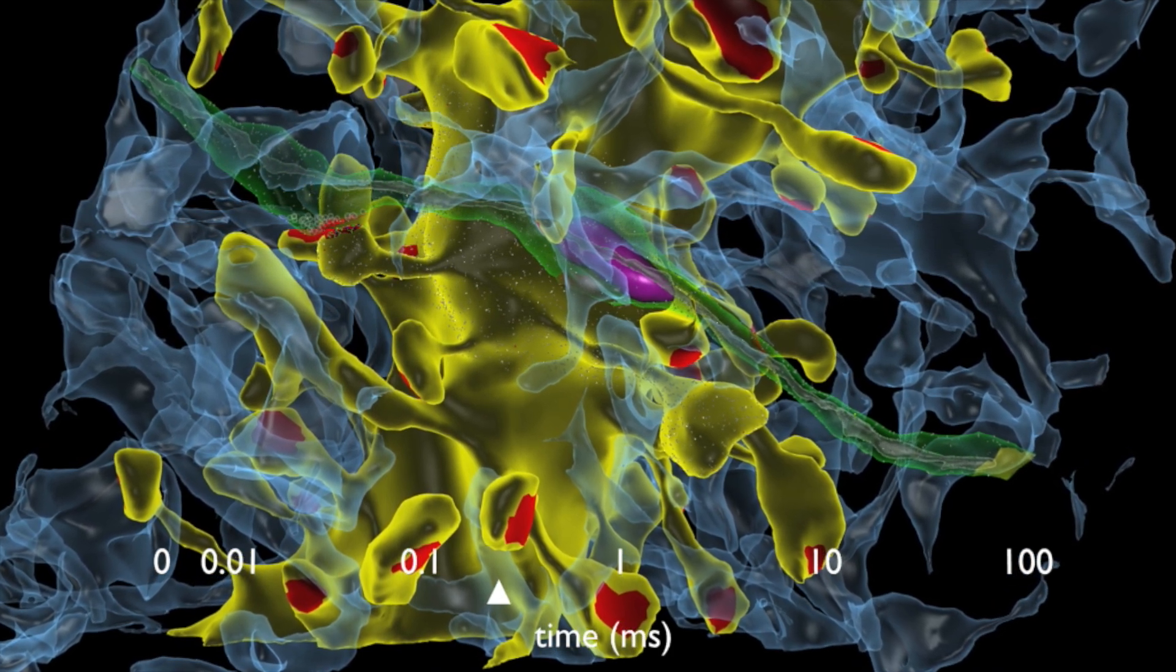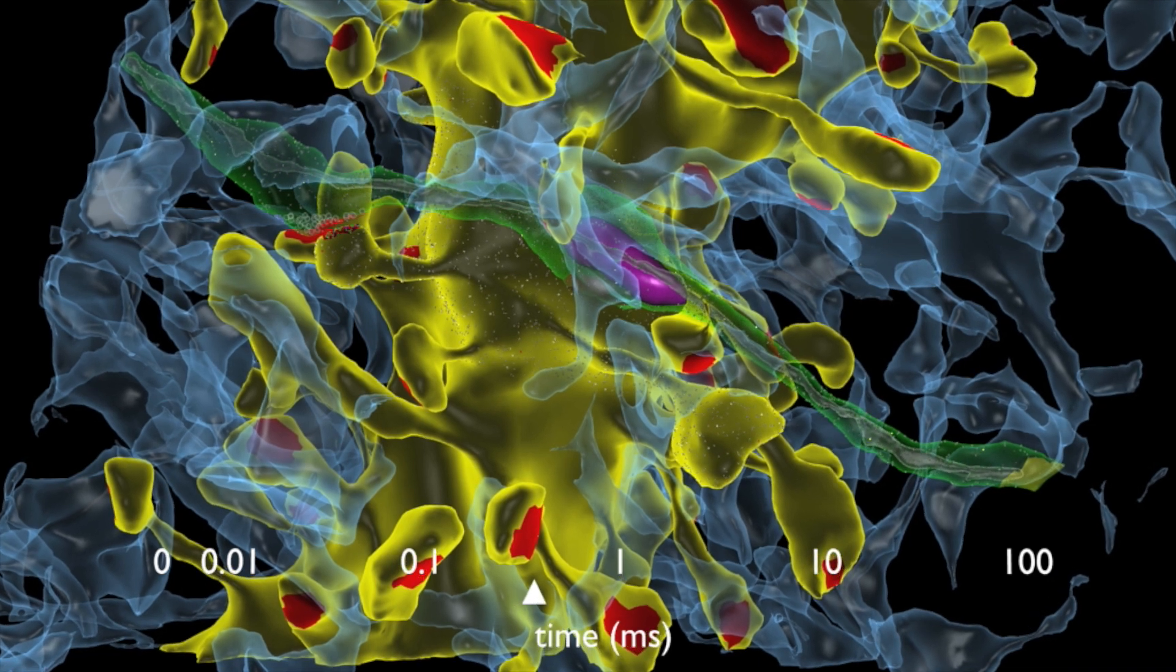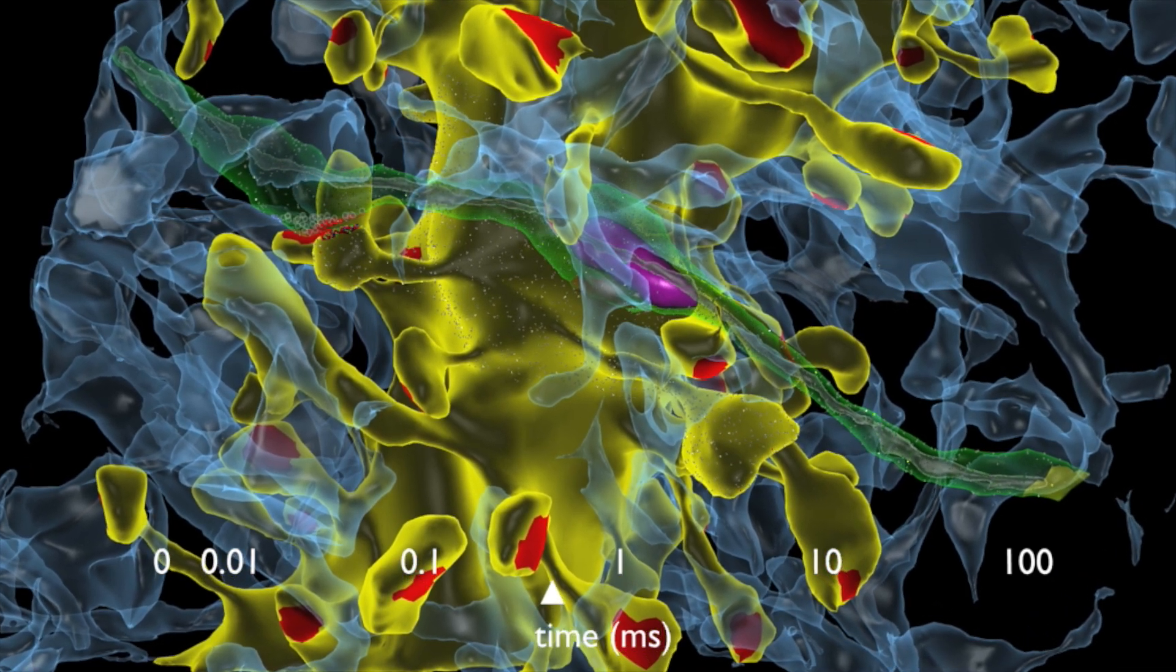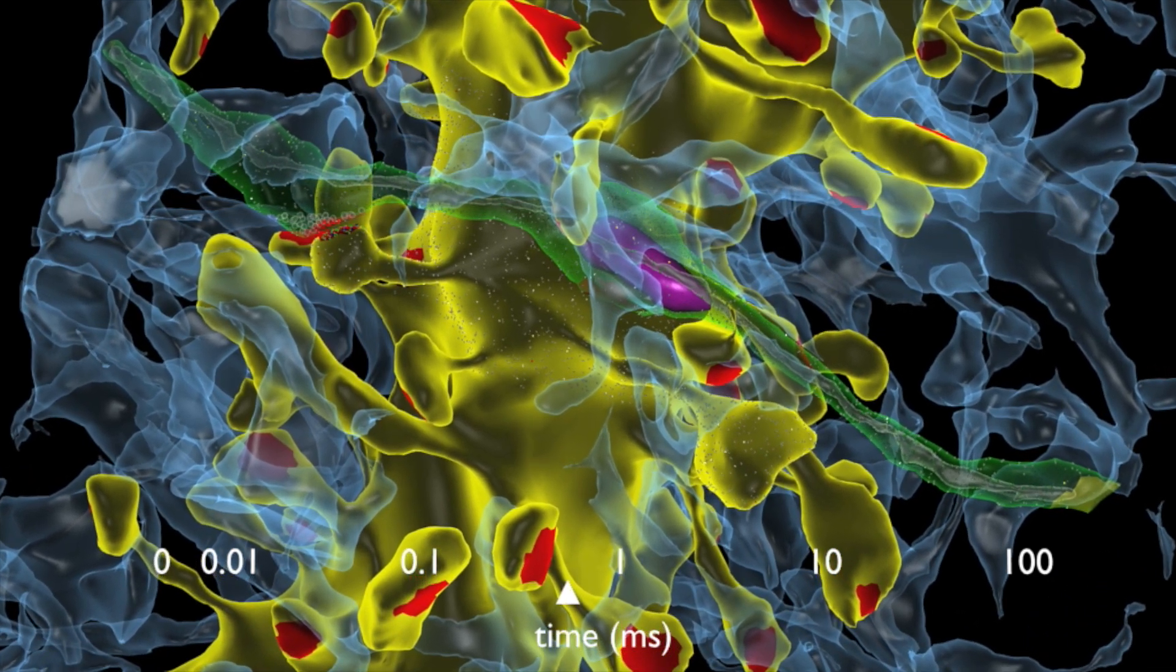This animation, based on experimental and quantitative data, shows what happens at a single synapse in a computational reconstruction of part of a rat's brain.